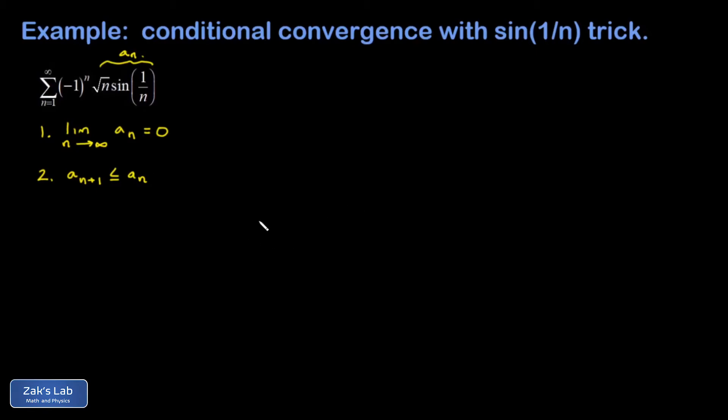We're going to look at first the limit as n goes to infinity of square root n sine 1 over n. Here we need to use a common trick about the sine function. We're going to use the fact that x is an upper bound for sine x. I'll post a link to the video where this was first derived. So the terms in this limit are less than the terms in this limit, square root n times 1 over n, because the argument of the sine function is an upper bound for the sine function itself.